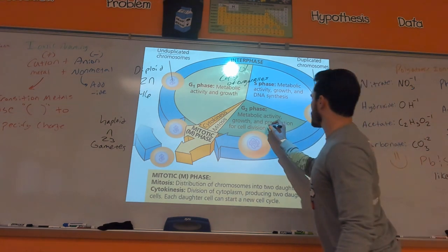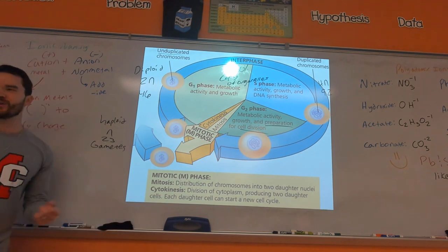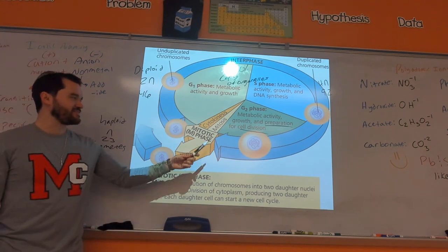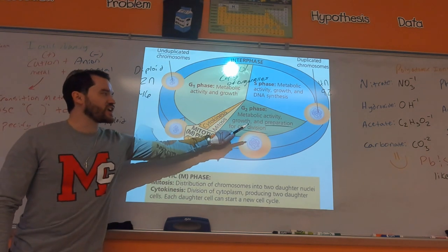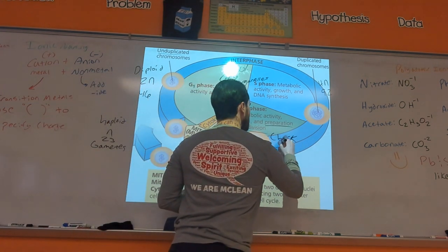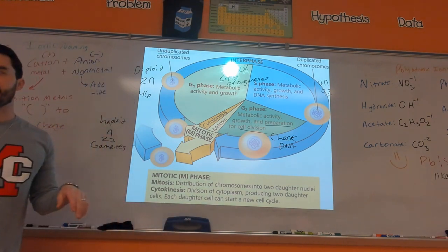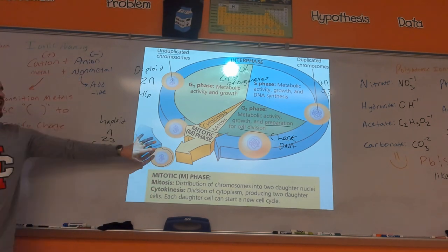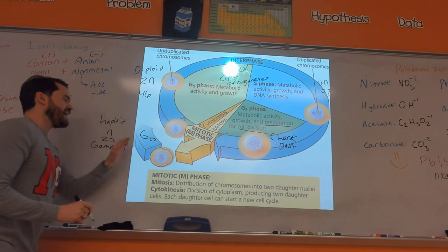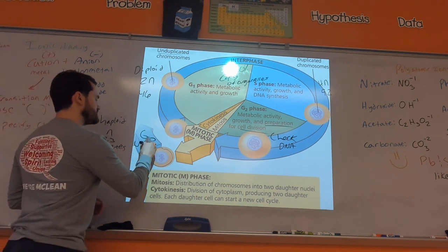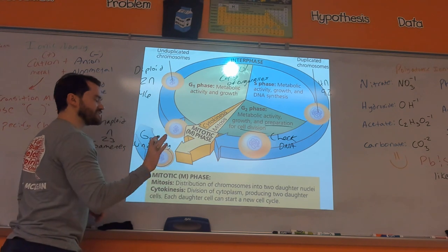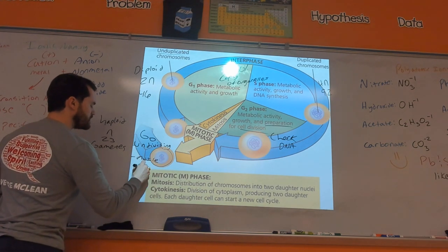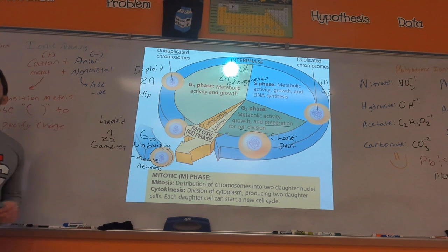A big part of G2 is preparation for cell division — think of Gatorade G2, preparing for athletic performance. Here we're going to check the DNA, making sure we didn't make any errors when we replicated it. If there are errors, we can kick that cell out and label it for destruction. This also represents something called G0 — cells that are non-dividing, like your muscle or nerve cells, your neurons.